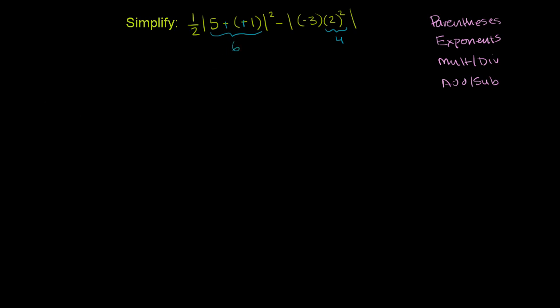So let's just rewrite what we have so we don't get too confused. So this is now 1 half times the absolute value of 6 squared minus the absolute value of negative 3 times 4. Now, the absolute value of 6 is clearly 6. 6 squared is going to be 36.